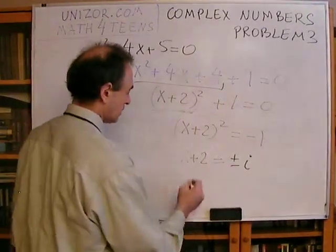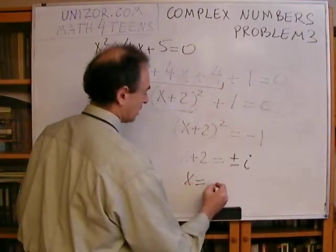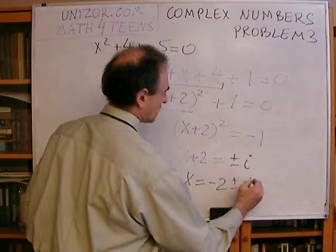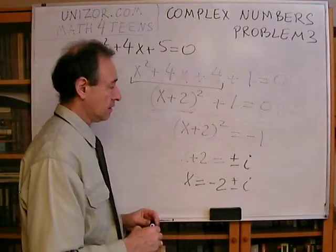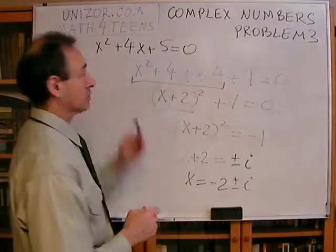we should really not forget plus and minus in this particular case. And obviously, from here, the solution is x is equal to minus 2 plus or minus i. We have two solutions, which is exactly the right thing for quadratic equations.